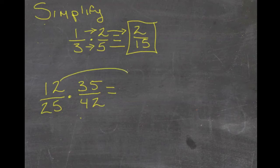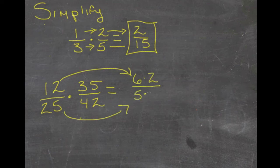12 is the same thing as 6 times 2, and 25 is the same thing as 5 times 5. 35 is the same thing as 7 times 5.